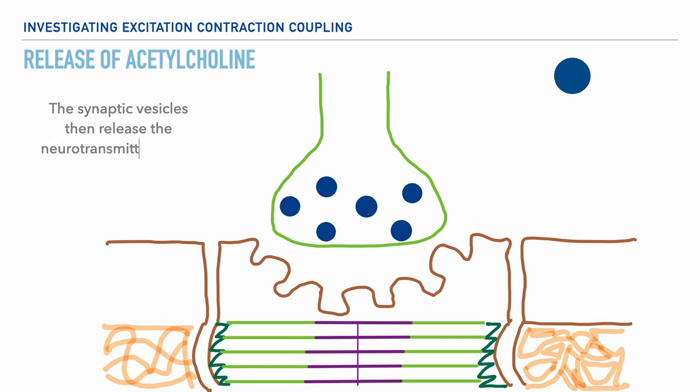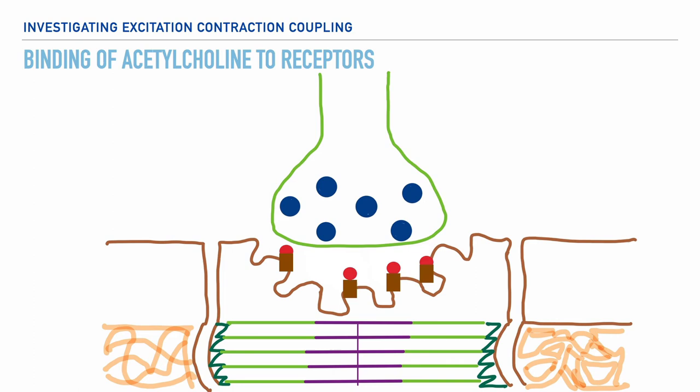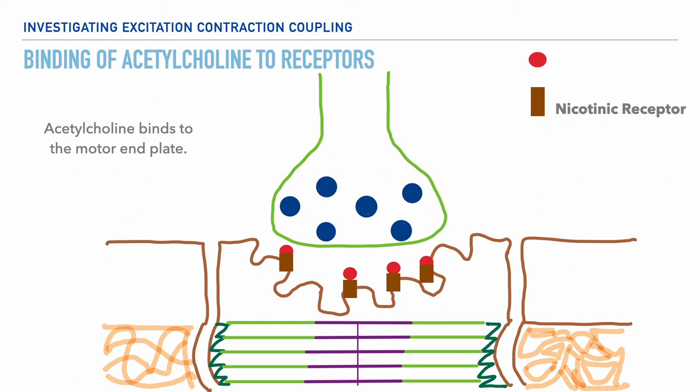The second step is that the synaptic vesicles release a neurotransmitter called acetylcholine. After their release, acetylcholine is now within the synaptic cleft. Next, the acetylcholine bonds to the motor end plate, specifically to its receptors, which are referred to as nicotinic acetylcholine receptors.